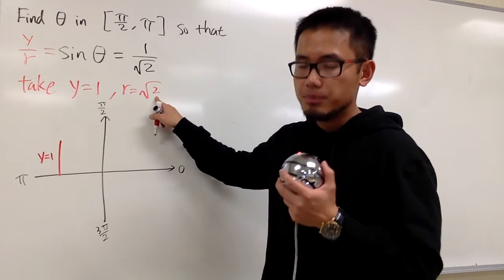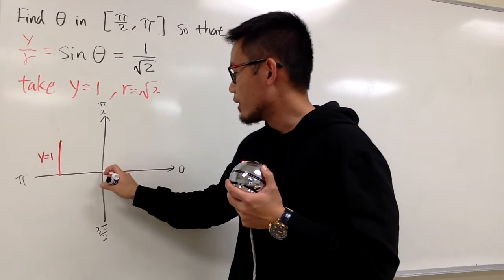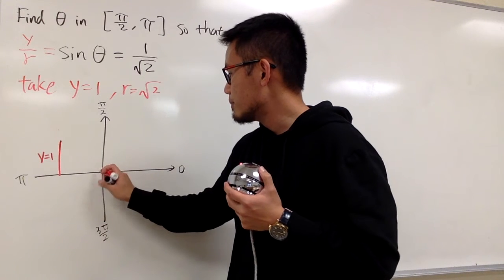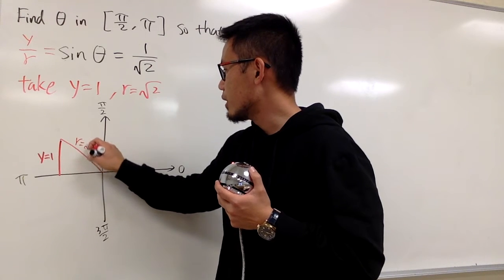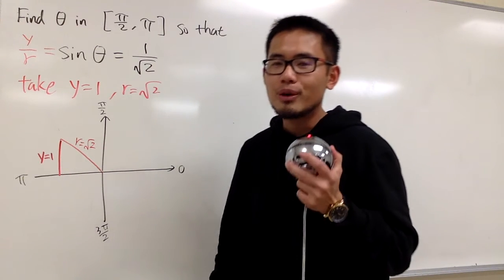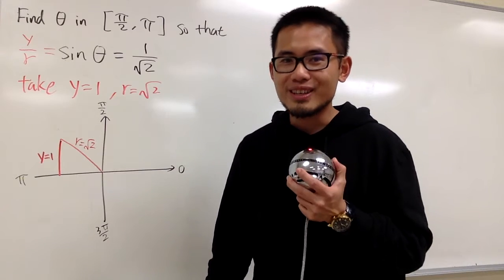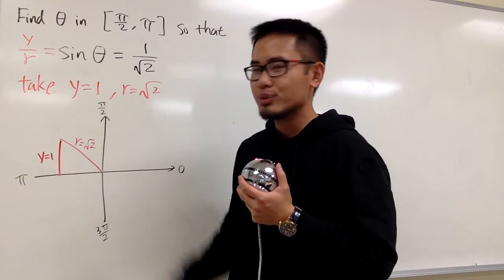And for the r being square root of 2, that means we go from the origin to that point here, and the r is square root of 2. And you see, you have to remember the special triangles. We have 1, square root of 2 already.